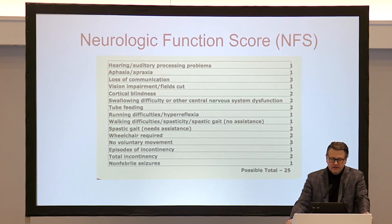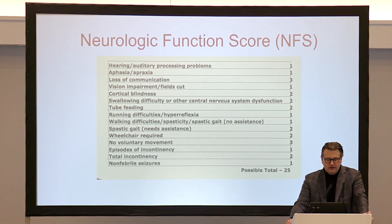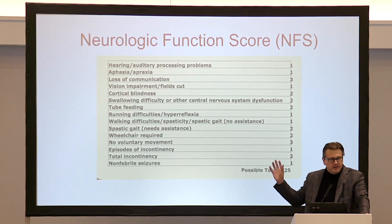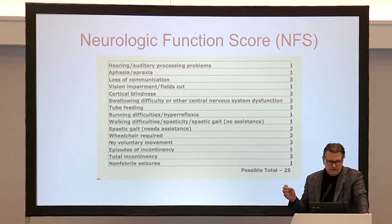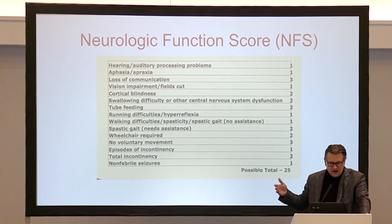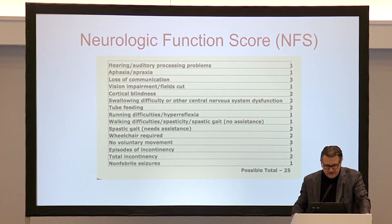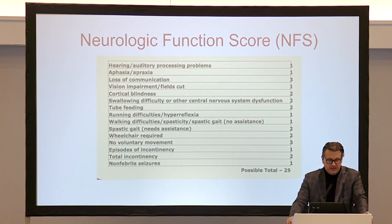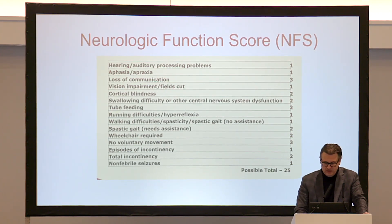The other thing we use to measure disease burden is the Neurologic Function Score, where points are given for neurologic dysfunction. We all start at zero, but if you have hearing or auditory problems you get a point, vision field cuts get a point, history of seizures gets a point, running difficulty, spasticity, episodes of incontinence — and so on. You can get to 25 points. Having one point is not necessarily a good thing, and greater than one point portends not as good outcomes.